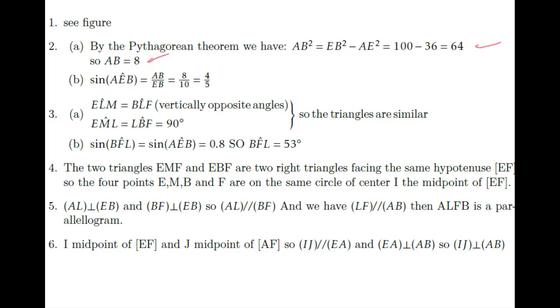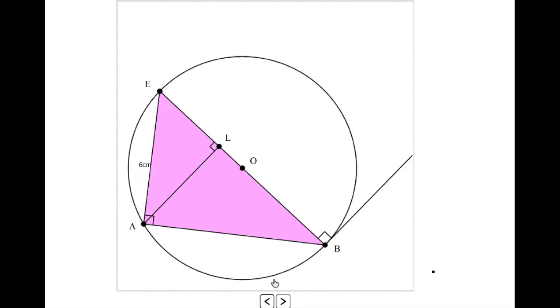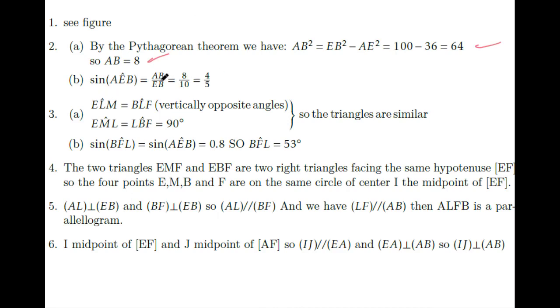We need to verify that sine of angle AEB equals 4/5. Sine of AEB equals the opposite over the hypotenuse, which is AB over EB. So AB is 8 and EB is 10, giving us 4/5.